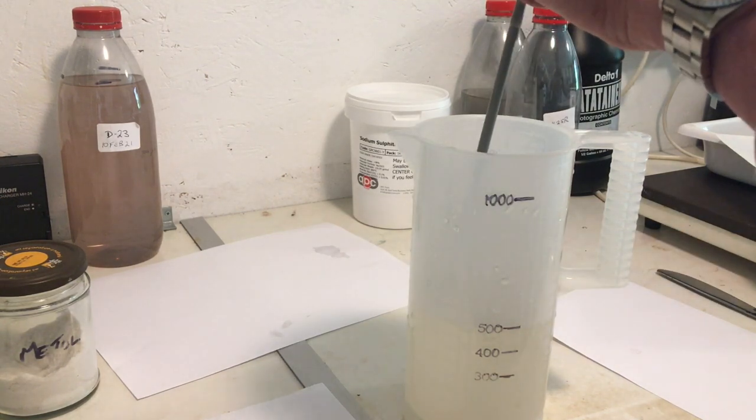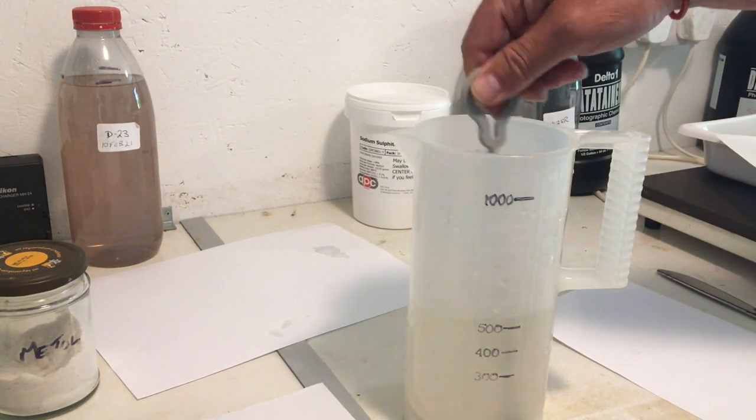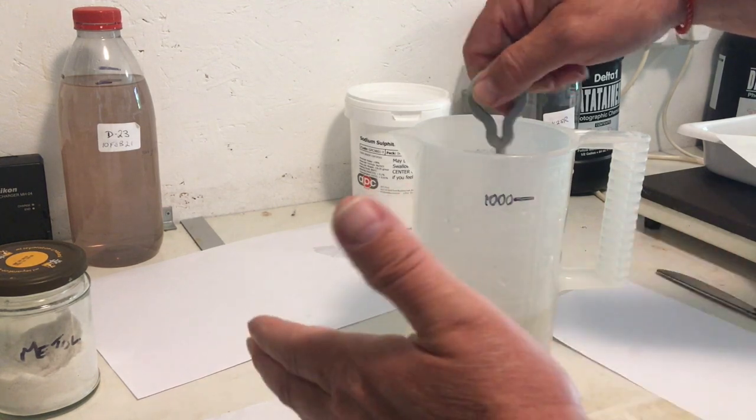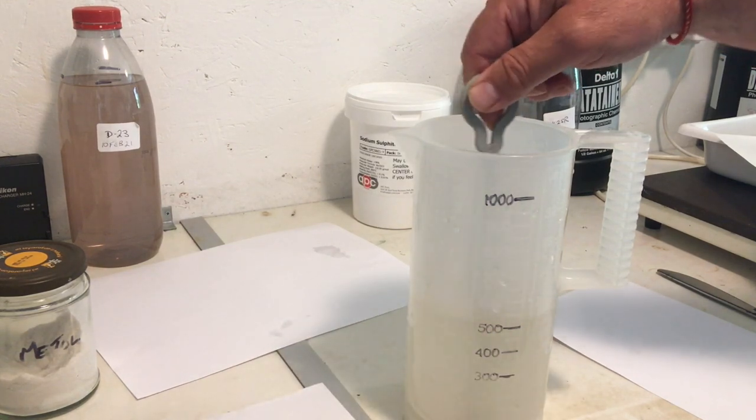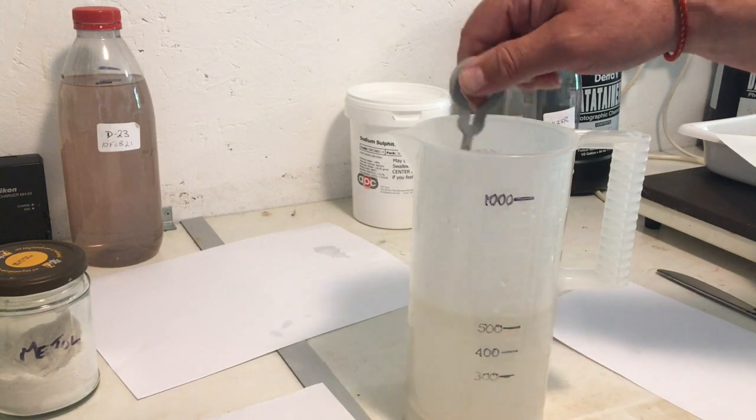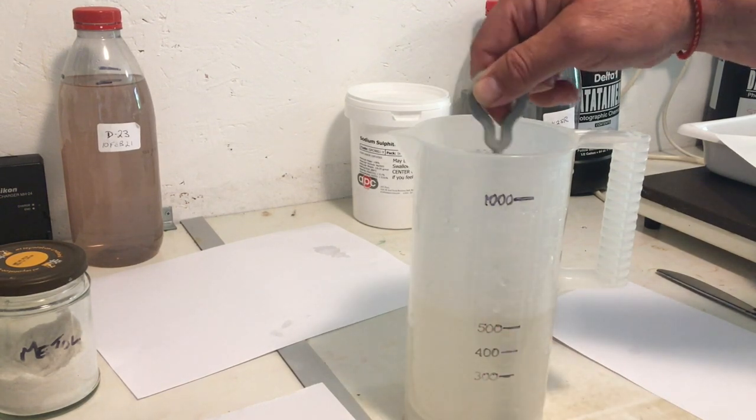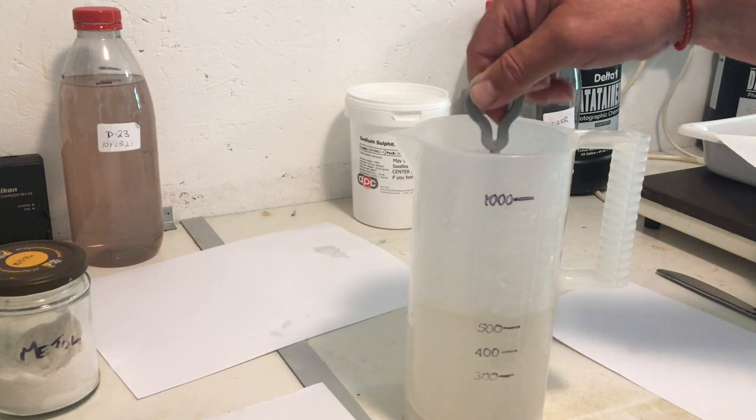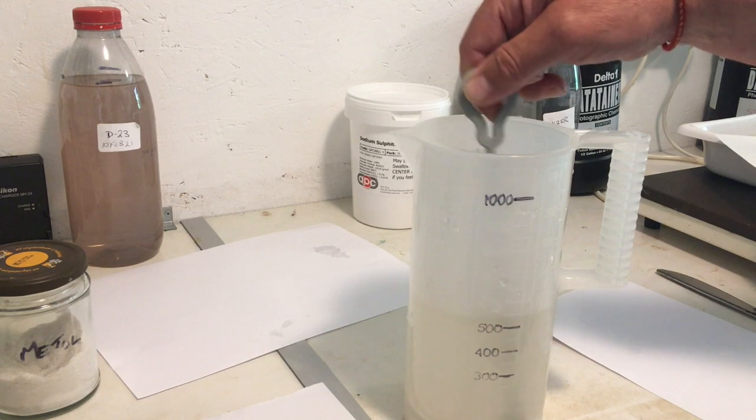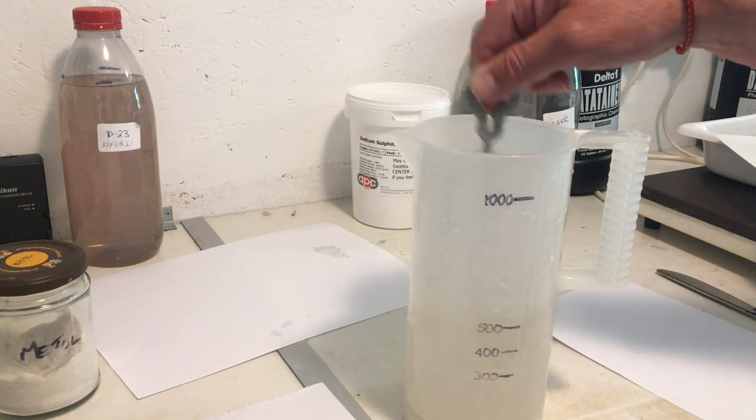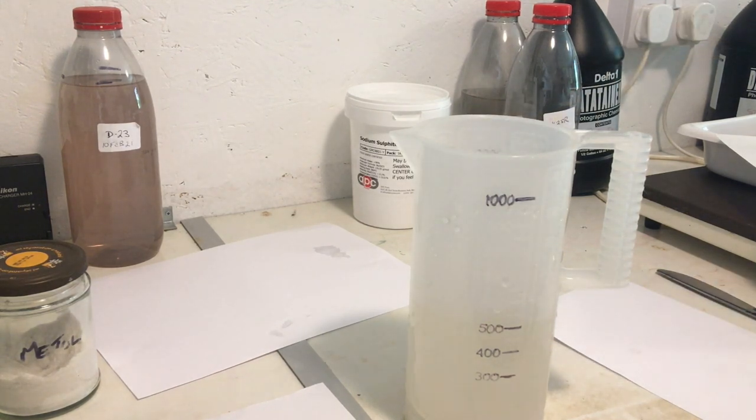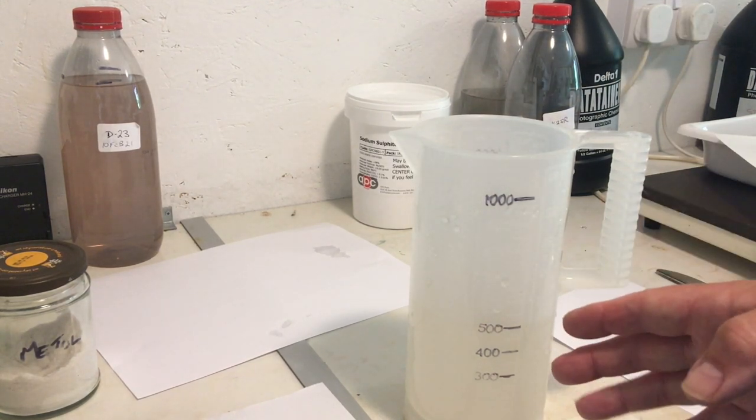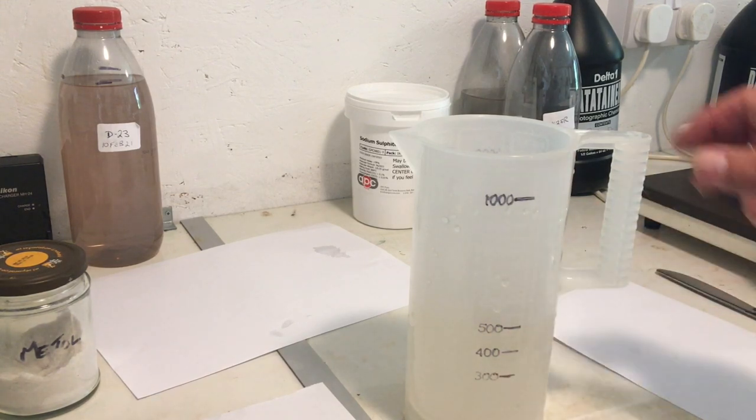I tend to make 500 milliliters of replenisher at a time. Because although the D23 is used for months and months and years it can be used for, the replenisher tends to be used up much more slowly and it tends to oxidize I think. So I make 500 ml at a time. It's easy to make a little bit more when you continue to replenish. There, all in solution. We have our D23 replenisher also known as DK25R.